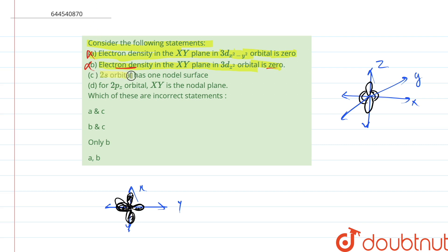Then c is that 2s orbital has one nodal surface. This given option is correct. Then the d part says that for 2pz orbital, xy is the nodal plane. So this statement is also correct.